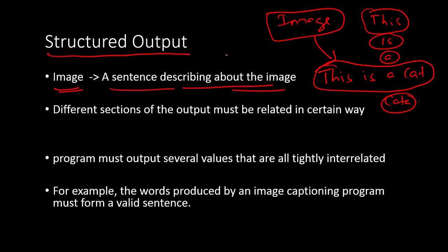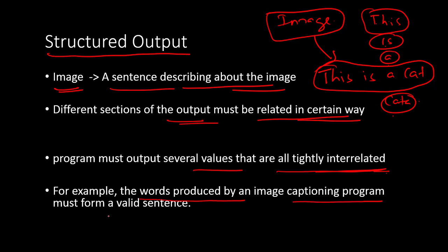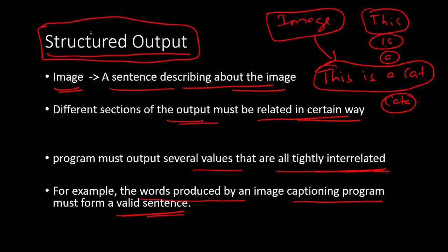The output has to be in a certain structure and sequence — like 'This is a cat' — so that it makes a proper grammatically correct sentence. Different sections of the output must be grammatically related, covering verbs, prepositions, nouns, and so on. The program must output several values that are tightly interrelated. A key example is image captioning, where the program must form a valid sentence that provides a meaningful caption for the given image.